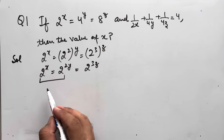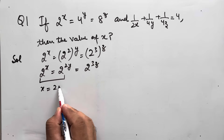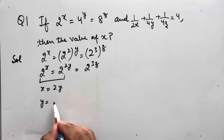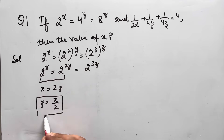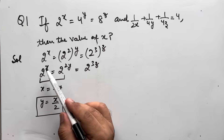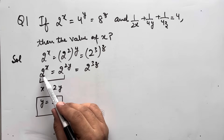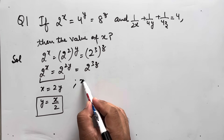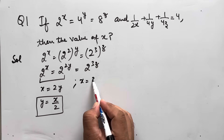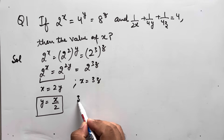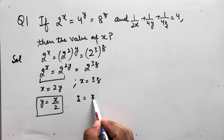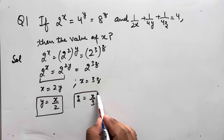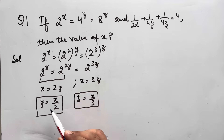So x = 2y, which gives y = x/2. Similarly, taking the first and third terms, since the base is the same, the exponents will be equal: x = 3z, so z = x/3.